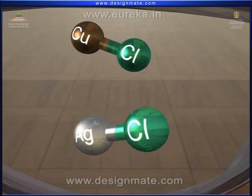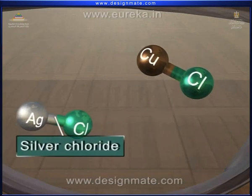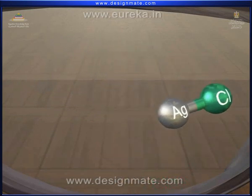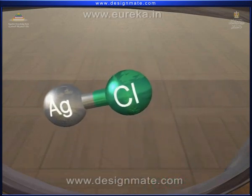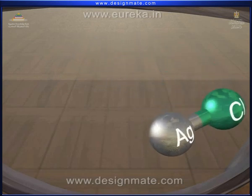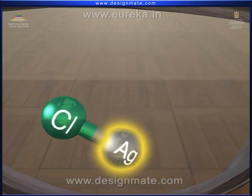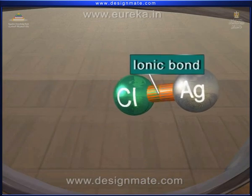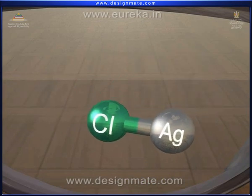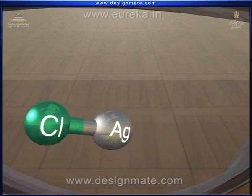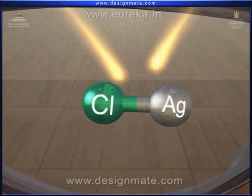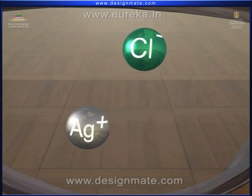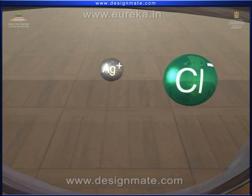Photochromic glasses additionally contain silver chloride and copper chloride. The AgCl molecule in photochromic glass is present as Ag+ and Cl- ions bonded to each other by an ionic bond. When photochromic glasses are exposed to sunlight, ultraviolet rays present in the sunlight break this ionic bond, forming Ag+ and Cl- ions.